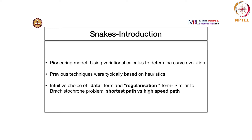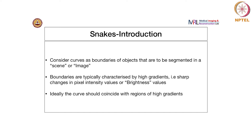When I say data term and regularization term, I would urge you to think back about the Brachistochrone problem, where we looked at whether we go fast by dropping vertically down a bit so that time is reduced, or we reduce time by going the shortest path. There was a tension there. Here, there is a tension between data and regularization terms. We will look at this in more detail in the next few slides.